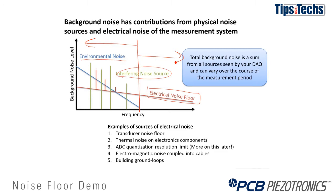In order to make a good measurement, we need to understand the total system noise floor and ensure that our measurement is at least 10 dB above that noise floor as a general rule of thumb.